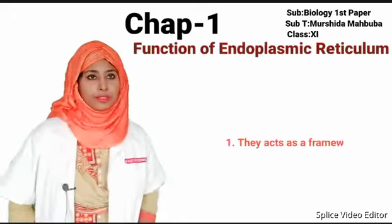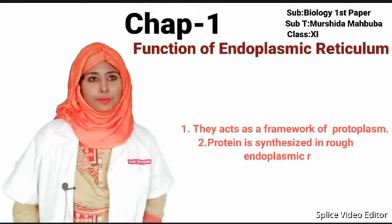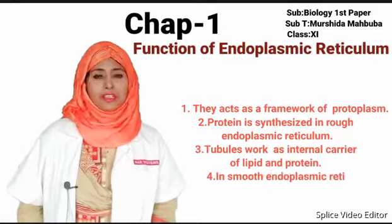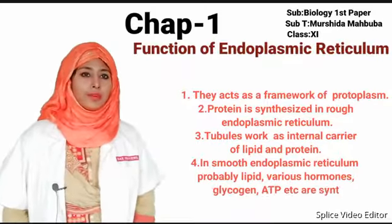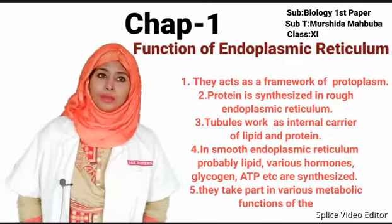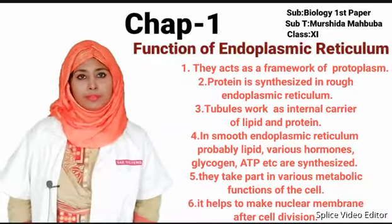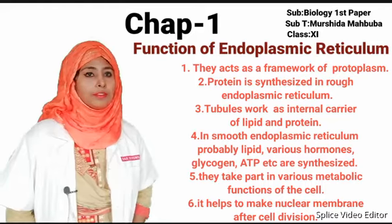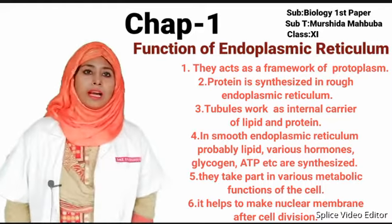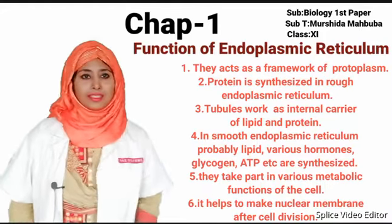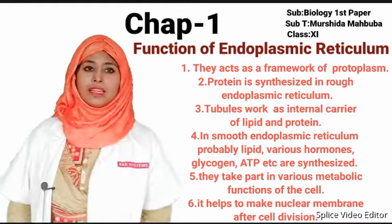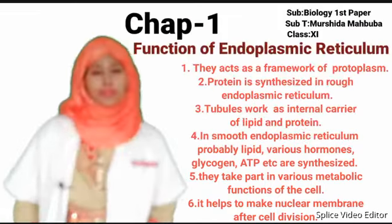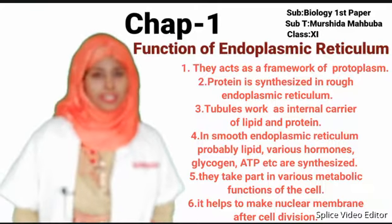Functions of endoplasmic reticulum: They act as a framework of protoplasm. Protein is synthesized in the rough endoplasmic reticulum. Tubules work as internal carriers of lipid and protein in the smooth endoplasmic reticulum. Lipid hormones, glycogen, and ATP are probably synthesized here. They take part in various metabolic functions of the cell and help form nuclear membranes after cell division.